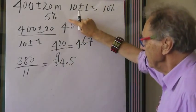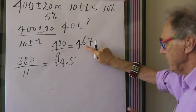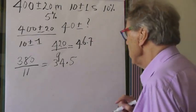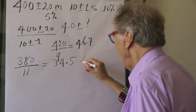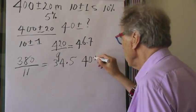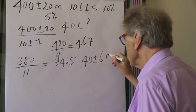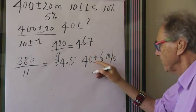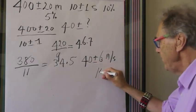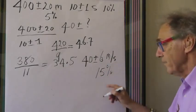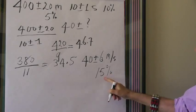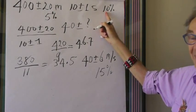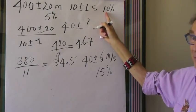Looking at 40 as the central value, with a maximum of about 46–47 and a minimum of about 35, I would conclude that the error is probably 6. So I would write 40 plus or minus 6 meters per second. Notice that 40 plus or minus 6 is a 15% error — that is no accident, because 15% is the sum of the 5% and 10% errors. That's another way you could have found the uncertainty.